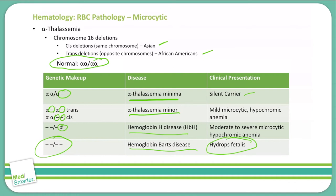Of note, during hemoglobin Barts disease in the fetal stage, before spontaneous abortion occurs, we do see an increase in the gamma globulin genes.